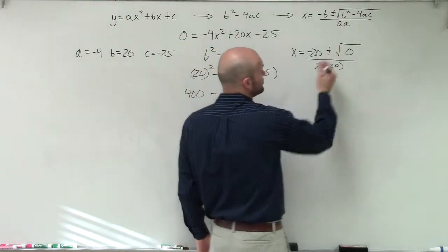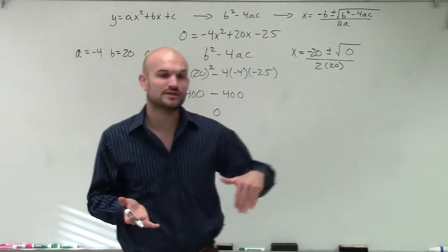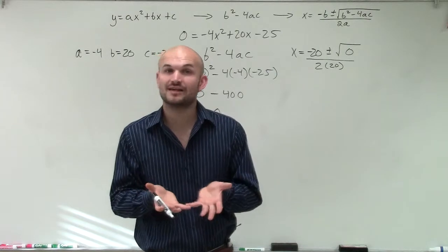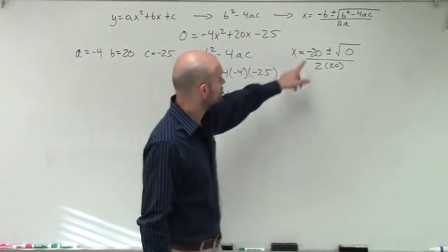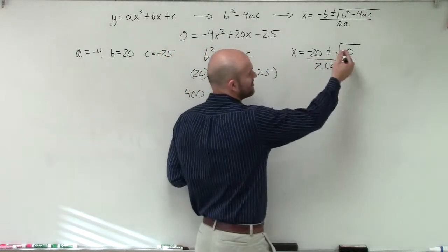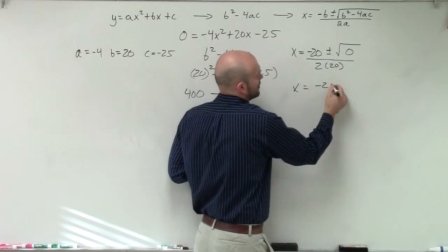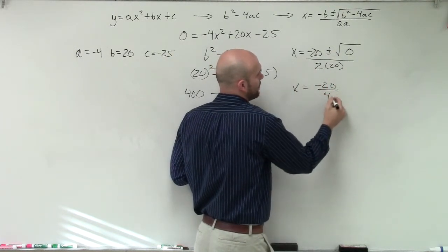Usually when you take the square root of a number, we're including the positive and the negative. But 0 doesn't have a positive or negative value. So negative 20 plus or minus 0 is just going to be negative 20. And then 2 over 20 is going to be 40.